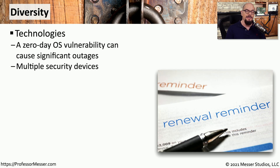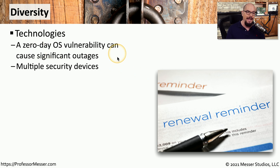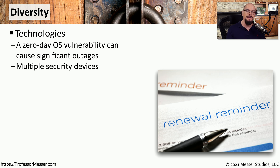One key to providing uptime and availability is to have diversity of technology. For example, a zero-day vulnerability might cause an outage with a particular operating system. But if you're running different operating systems, you may still be able to provide uptime and availability, because that zero-day attack is only going to affect a subset of your services. Some organizations might implement this diversity of technology by using different types of security components — not only a firewall, but also an IPS and a separate spam filter.